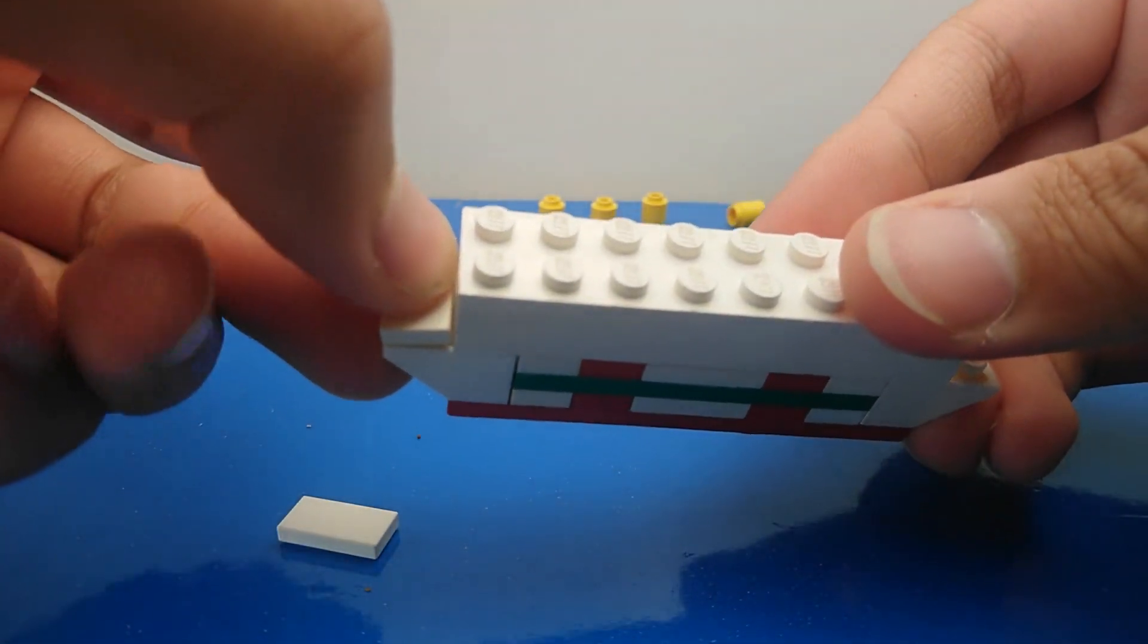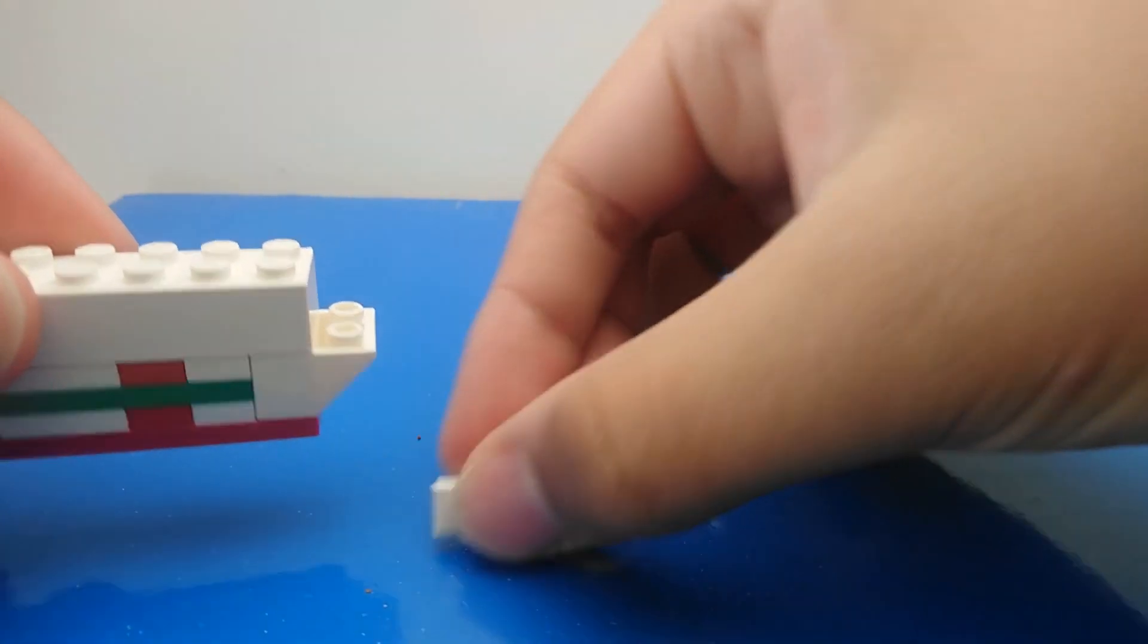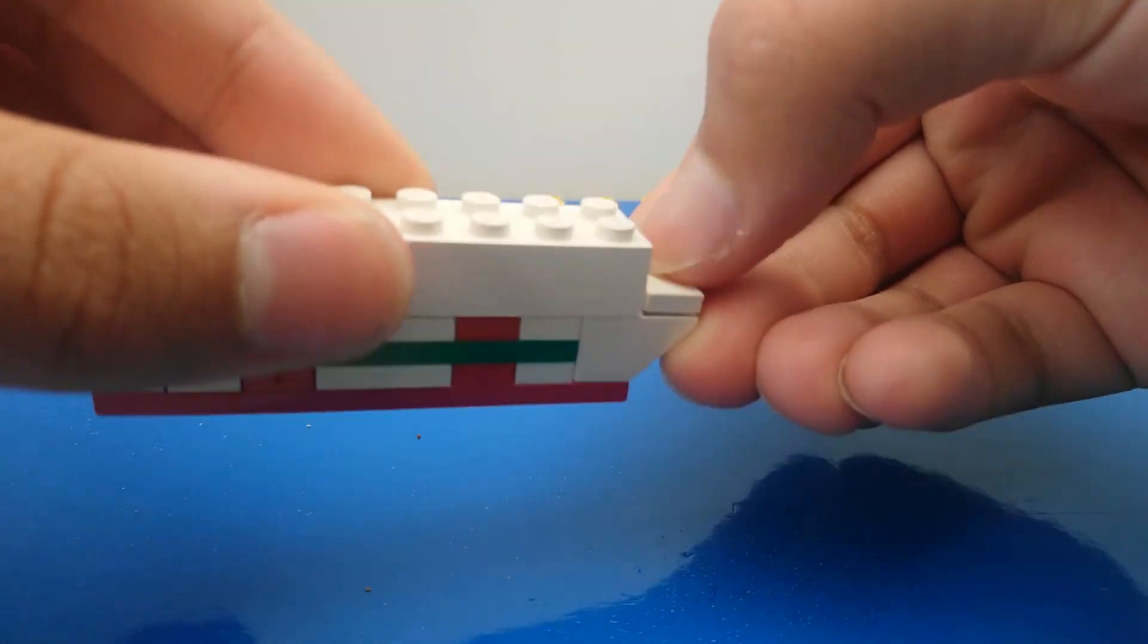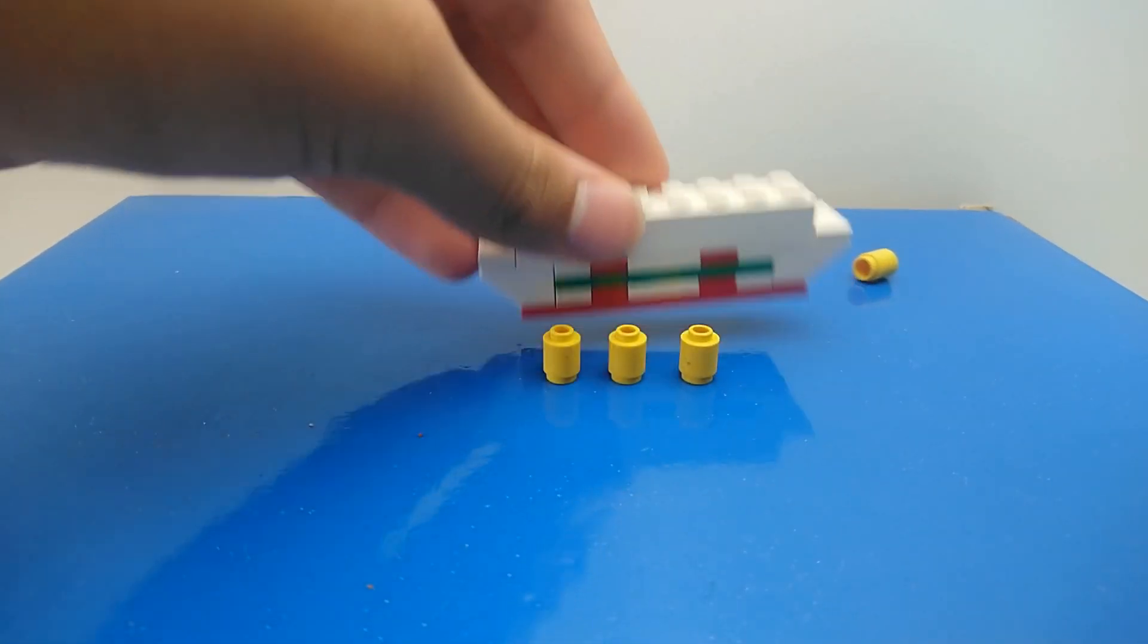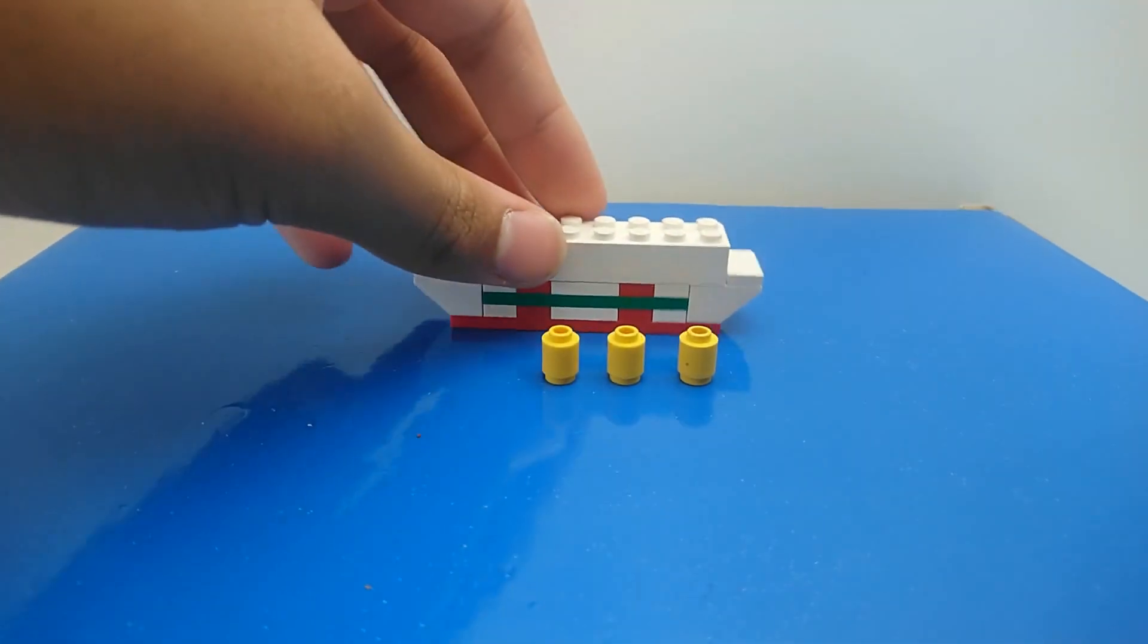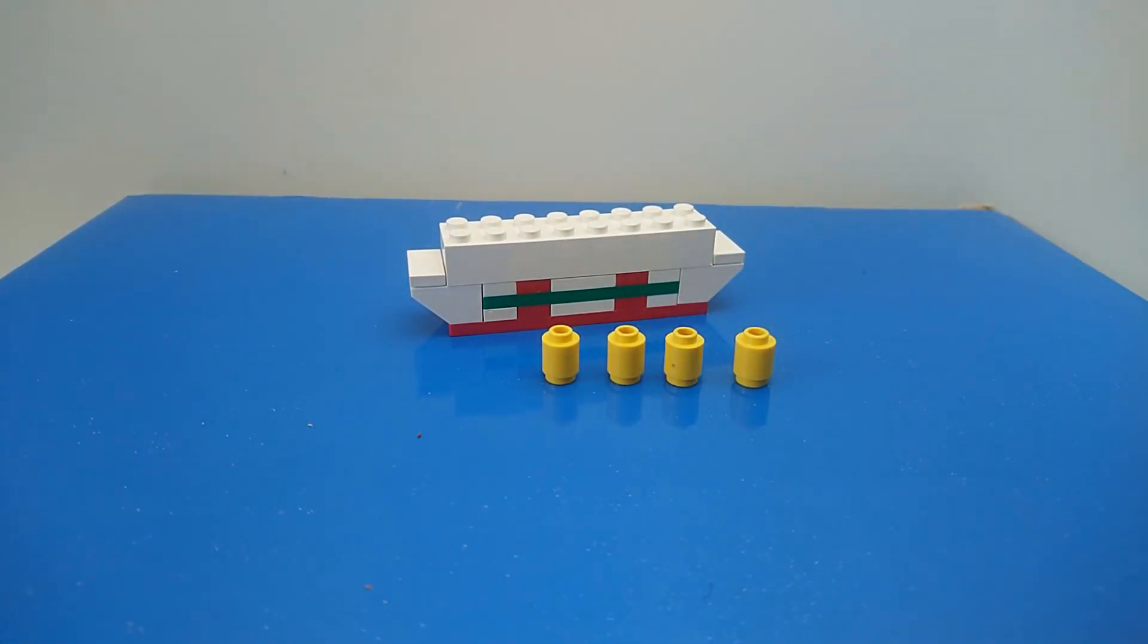Now these are the funnels which, when I made the second how-to-build video of the Titanic—sorry—I switched out the funnel pieces, but the entire build was exactly the same. So these are the funnels now, these are the correct pieces.